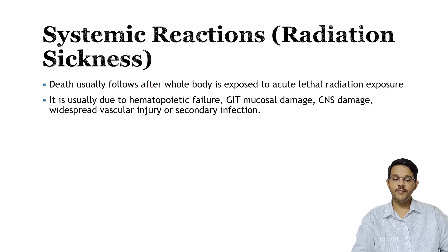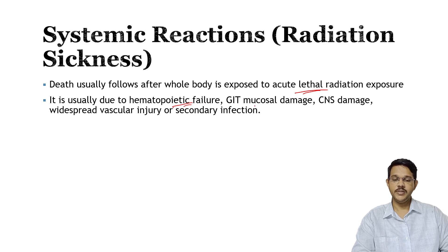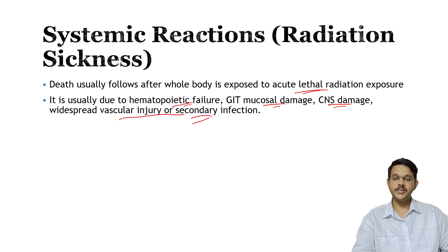Death usually follows when the whole body is exposed to a lethal dose of radiation, mainly caused by hemopoietic failure — that is, bone marrow suppression — where the person is unable to develop new hemopoietic cells including RBCs and WBCs. Death may also result from GI damage, vascular injury, and secondary infection. These are the many reasons a person may die when exposed to a lethal dose of ionizing radiation.